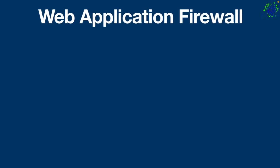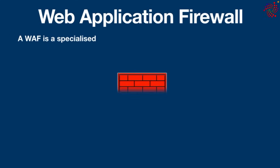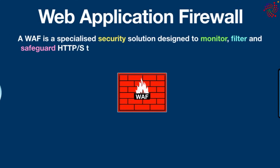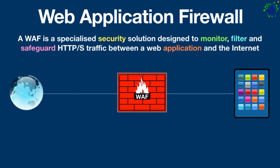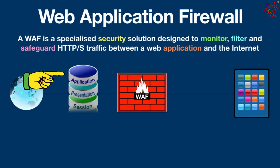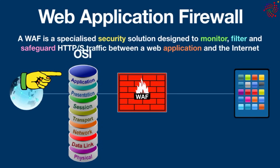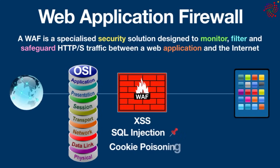Hello everyone, welcome back to another video. What is a web application firewall and how does it work? A web application firewall, also known as WAF, is a specialized security solution designed to monitor, filter, and safeguard HTTP and HTTPS traffic between a web application and the internet. It works at the application layer — layer 7 of the OSI model — and is specifically developed to prevent attacks such as cross-site scripting, SQL injection,